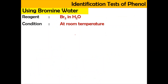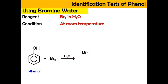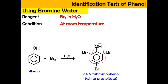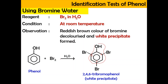Phenol can be identified using bromine water at room temperature. When phenol reacts with bromine in water, it produces 2,4,6-tribromophenol, where bromine atoms attach at carbon positions 2, 4, and 6. As a result of this reaction, the reddish-brown bromine solution is decolorized and a white precipitate is formed, indicating the formation of 2,4,6-tribromophenol. This white precipitate confirms the presence of phenol.